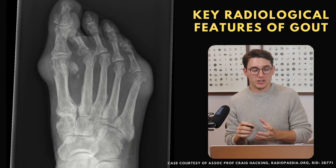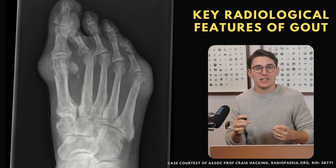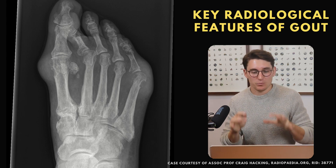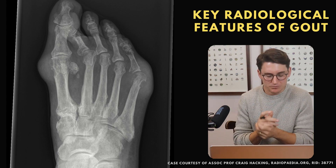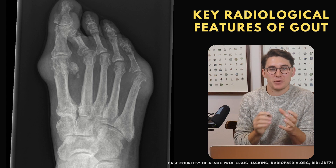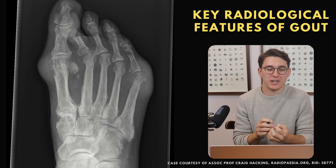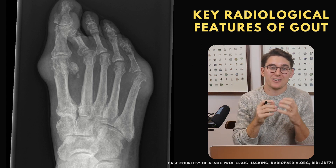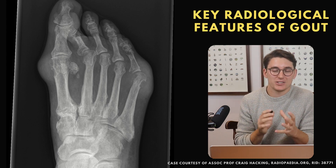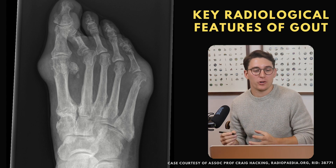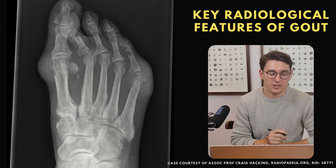Let's have a look at our first image and discuss the key radiological features of gout. Gout generally predominates in the lower extremities, though it can happen in the upper extremities too. Crucially, the joint space — especially in early gout — is preserved, unlike many arthropathies which obliterate the joint space. The joint space is preserved until late in the disease. In most cases of gout, bone density is normal; we generally have a patient with healthy bones showing features of arthropathy on x-ray.